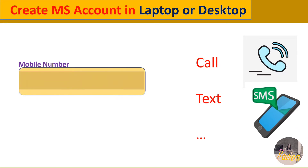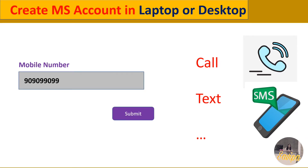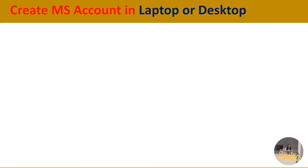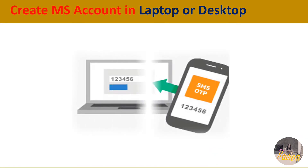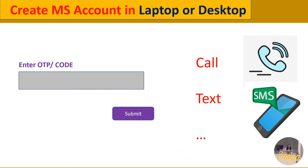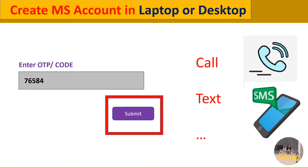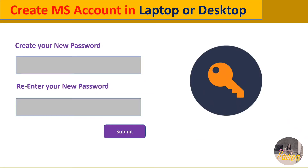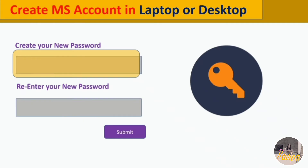Once you select your option, enter your mobile number and click Submit. An OTP will be sent to your registered mobile number. Enter that OTP and click Submit. After submitting the OTP, you will be taken to a new page where you can create your new password.